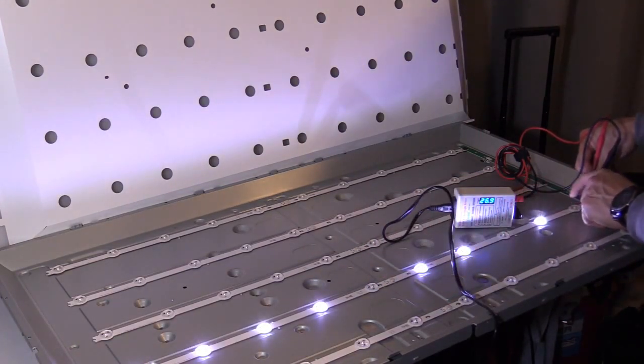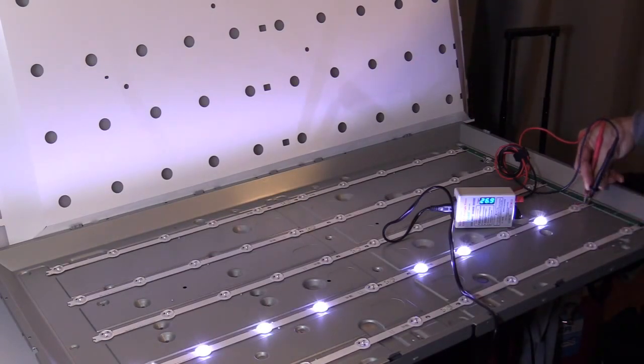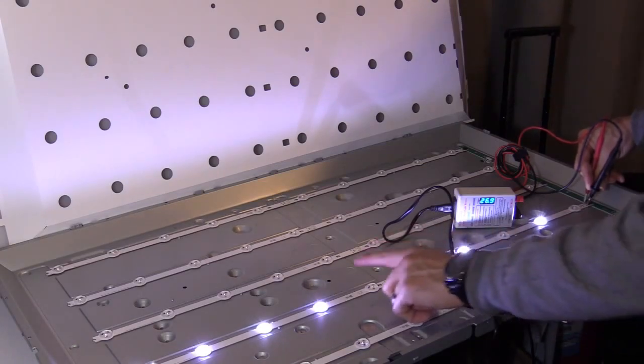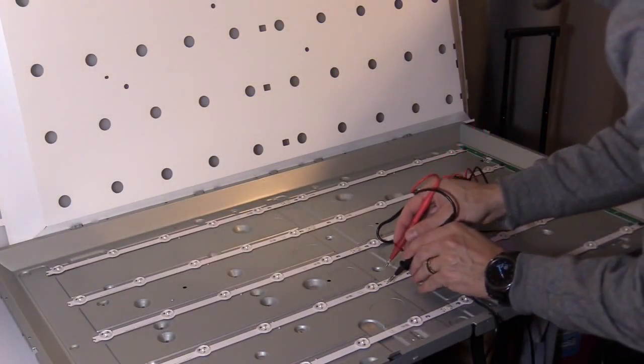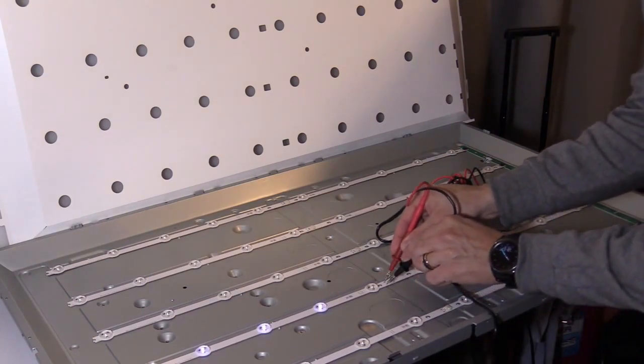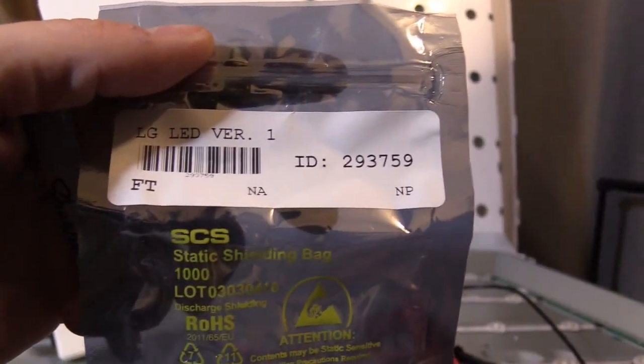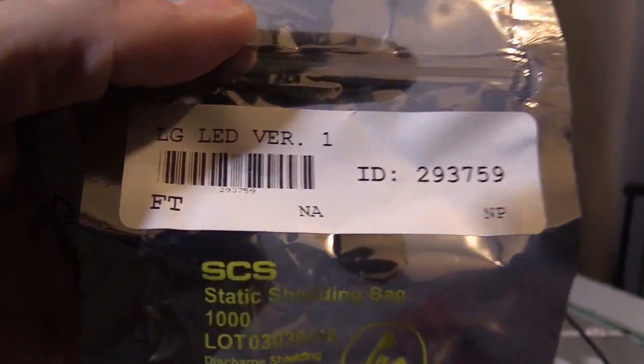Right here, it looks like we have two bad LEDs. Those two bad LEDs are enough to shut down the whole entire backlight circuit. It's a safety precaution that the circuit shuts down if something fails. It just prevents further damage to the TV.